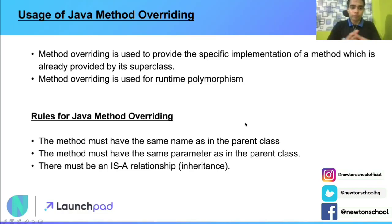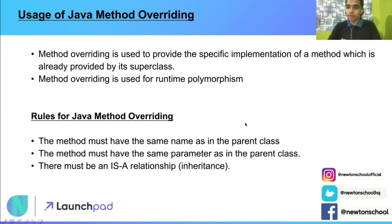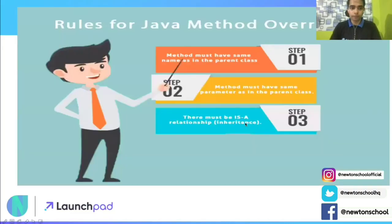Now let's understand the rules for creating Java method overriding. First rule: the method must have the same name as in the parent class — not just a similar name, the exact same name. Second: the method must have the same parameter as in the parent class. This is very important, and it is the difference between method overloading and method overriding. In method overloading you can have different parameters or signatures, but in method overriding the parameters must be exactly the same. Third: there must be an 'is-a' relationship, meaning the child class must be inherited from the parent class.